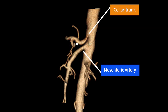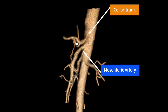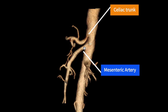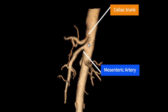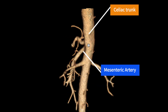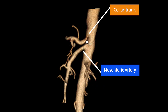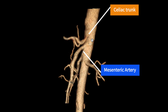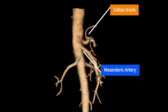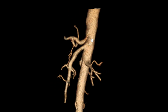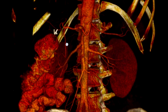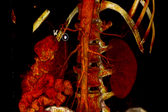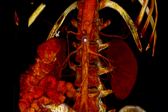3D volume rendered images show the normal mesenteric artery and the flattened celiac trunk secondary to compression by the median arcuate ligament. There can also be hypertrophy of the pancreaticoduodenal artery in cases of median arcuate ligament syndrome.